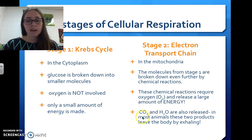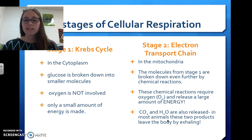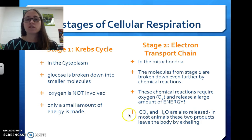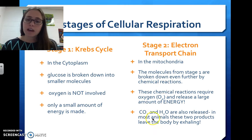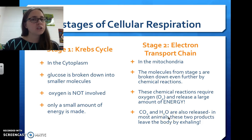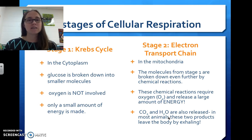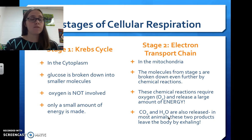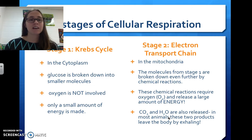We also make carbon dioxide and water during stage 2, and when we exhale as animals, those are things that leave our body. Notice that carbon dioxide and water are also used in photosynthesis, so plants have a nice cycle: whatever is made in cellular respiration is used in photosynthesis, and whatever is made in photosynthesis is used in cellular respiration.